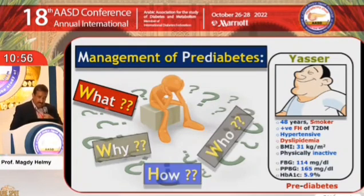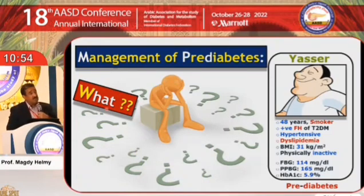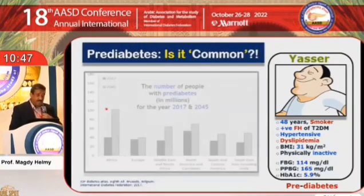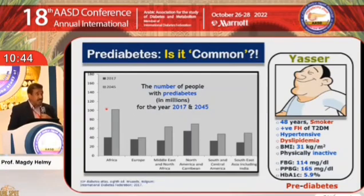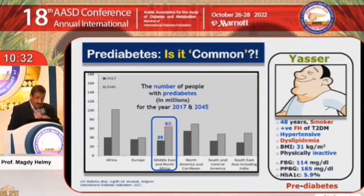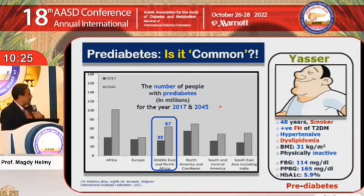The second question is: what are the consequences or complications of pre-diabetes? This is an important question, given that pre-diabetes is a very common condition. In 2017, in the MENA region, approximately 35 million people had diagnosed pre-diabetes, a number expected to double by 2045. So it is a very relevant question.